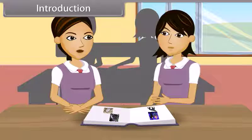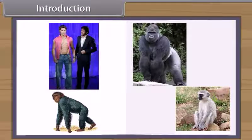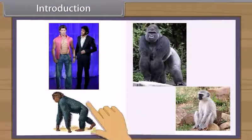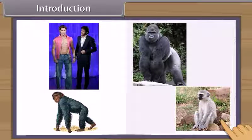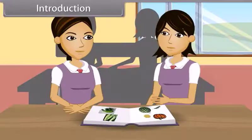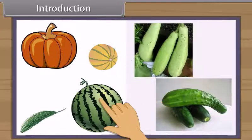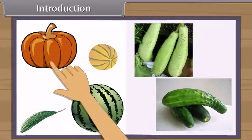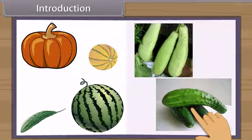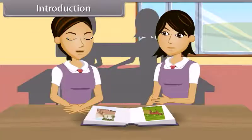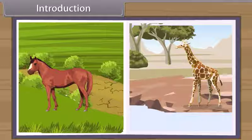But within a genus, there are some similarities. For example, human beings, chimpanzees, gorilla and monkeys are all alike. Similarly, among plants, melon, watermelon, bitter gourd, pumpkin, bottle gourd, cucumber, etc. have many similarities. But when we study two genera, then we find out they are entirely different.